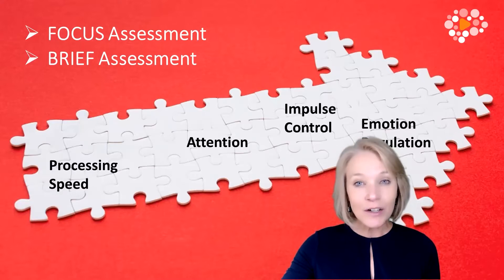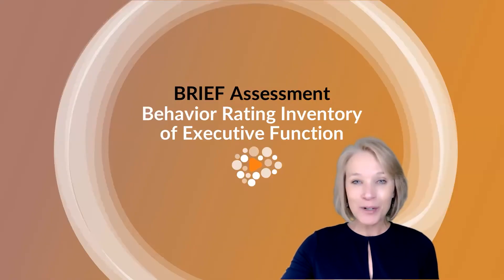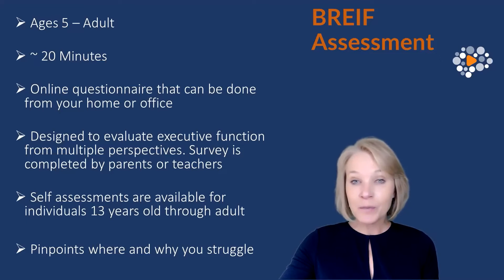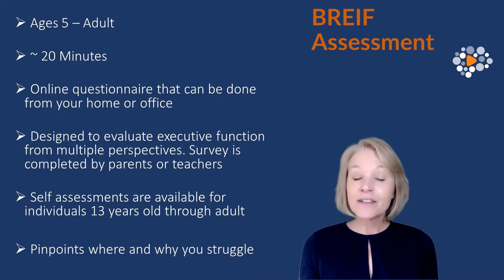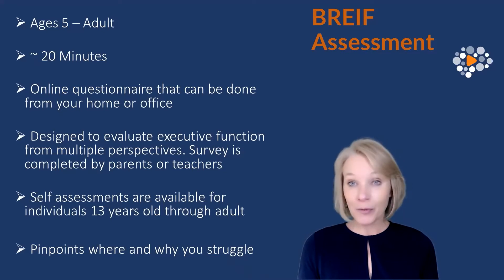Let's look at the two different assessments available. The BRIEF — which stands for Behavior Rating Inventory of Executive Function — is about 20 minutes in length. You can do the BRIEF if you're five years old all the way up through adulthood. It's an online questionnaire that can be done from your home or your office, and it's designed to evaluate executive function from multiple perspectives.